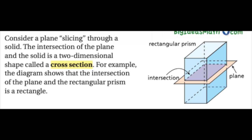And so for this example, a rectangular prism, when you cut it and you slice it along that plane, that intersection is actually just a rectangle, okay? And so we're going to look at a couple more examples, and here they are.